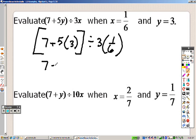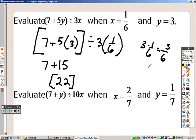Do what's inside the parentheses first, which gives me 22. Then when I multiply those two, 3 times 1 sixth is 3 over 6, which reduces to a half. So really I'm saying do 22 divided by a half.